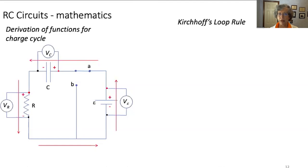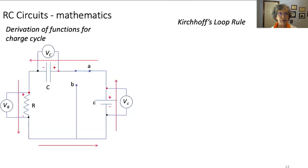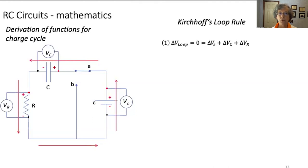I'll model this derivation for you step by step. For the discharge cycle, I'm going to specifically encourage you at given points to perform the steps yourself. If you've done a derivation similar to this one before, I strongly encourage you to pause the video now and do the derivation on your own, then continue the video and compare your method to mine. Equation one illustrates Kirchhoff's loop rule mathematically: the sum of potential differences when one makes a complete loop around a circuit is zero. We're going to look at each term in this law individually.